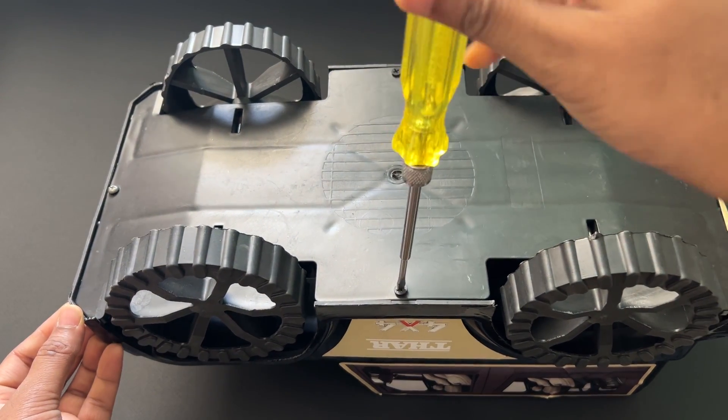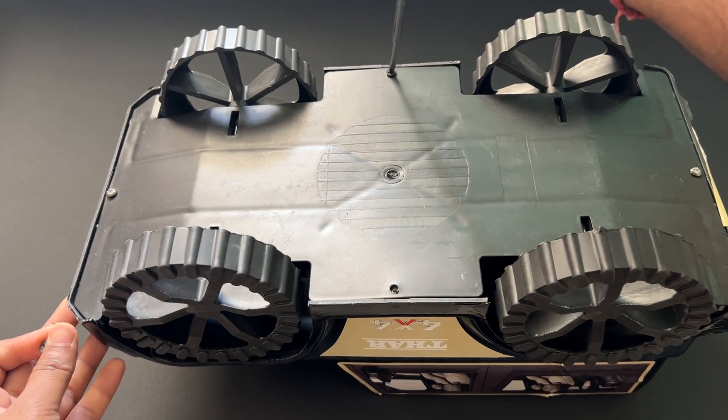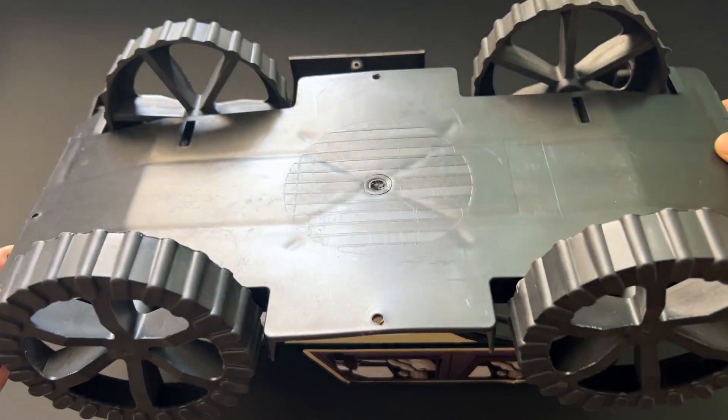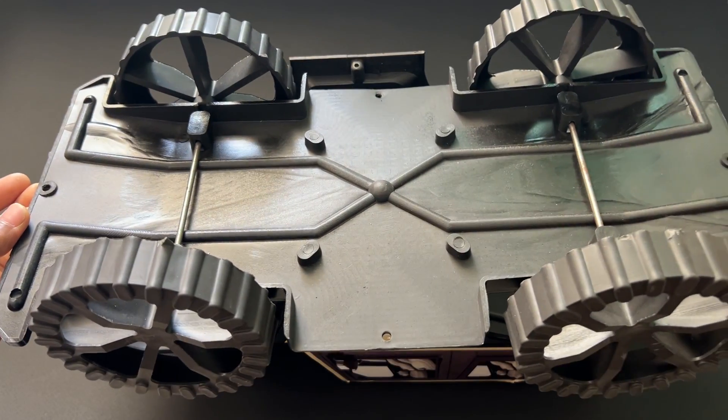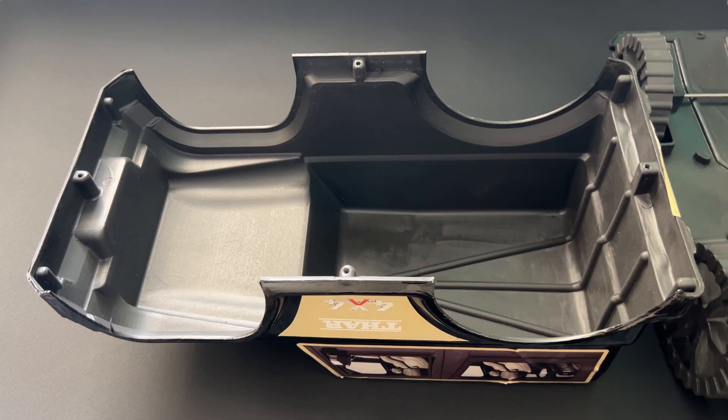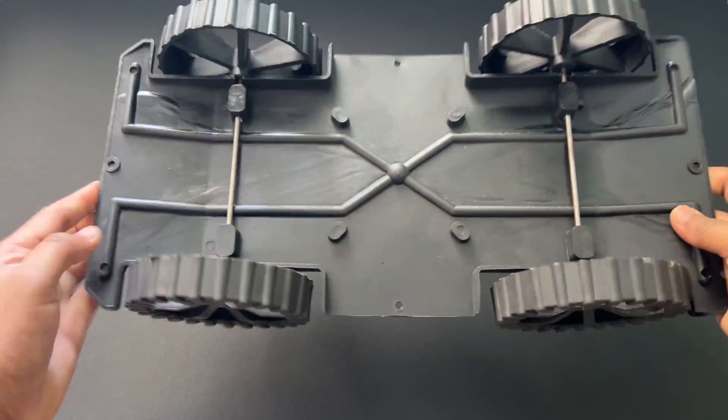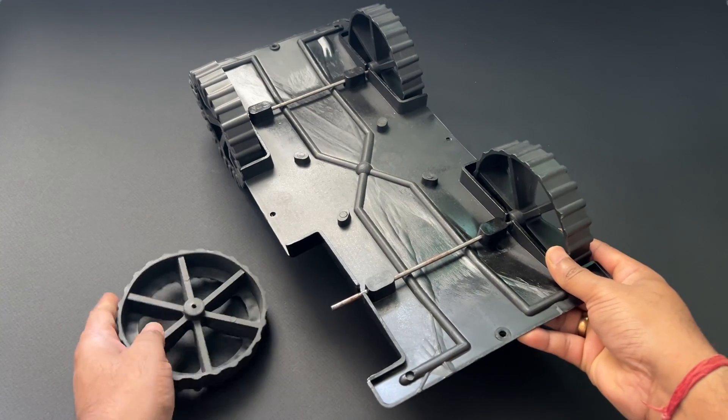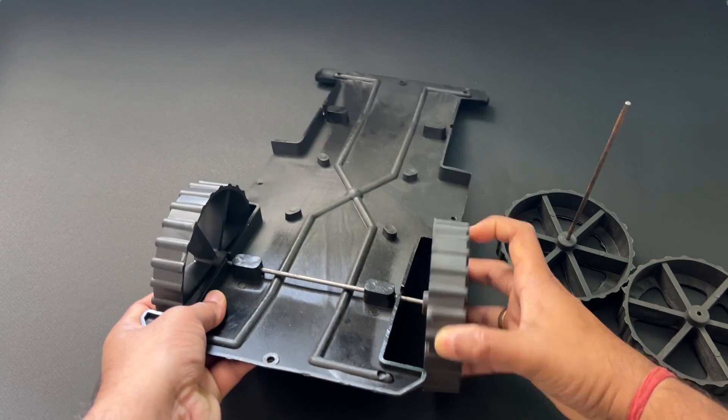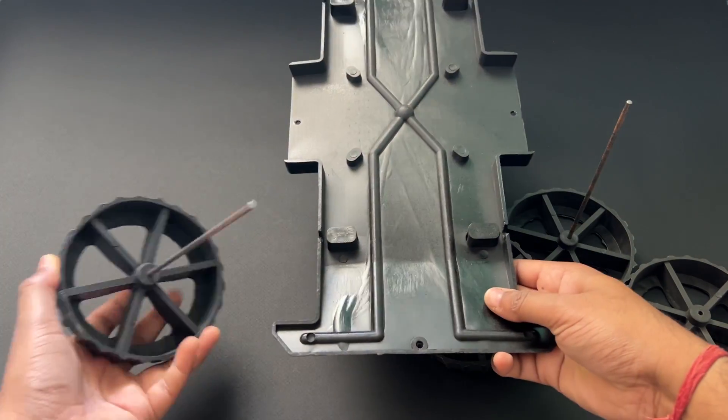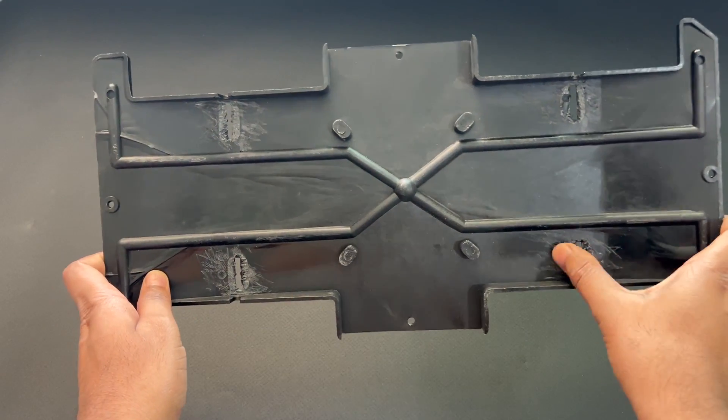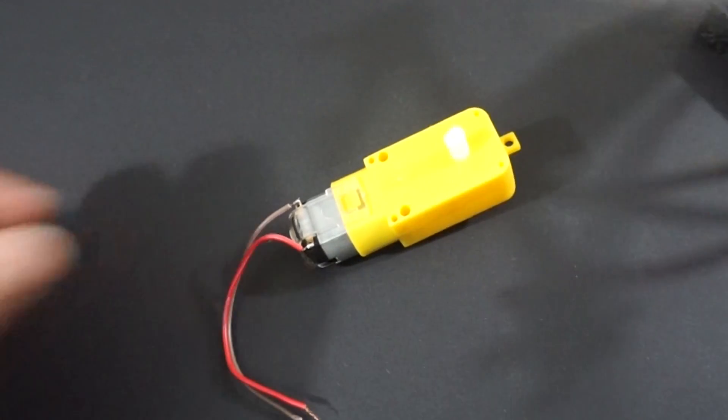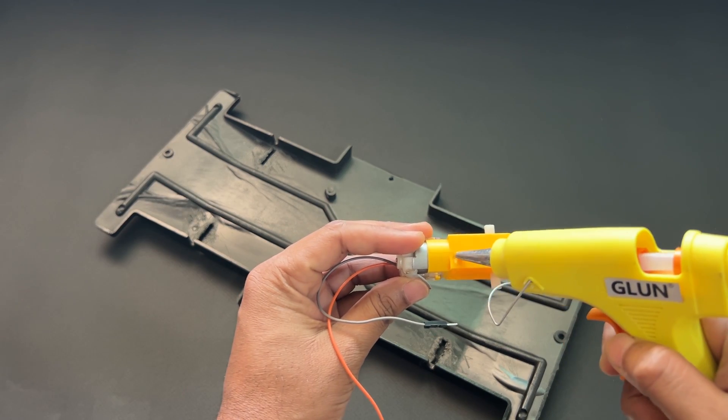Let's assemble the car now. We will disassemble the car model first. Now we will detach the wheels. Let's solder wires to the gear motors and mount all four motors on the car chassis using a glue gun.